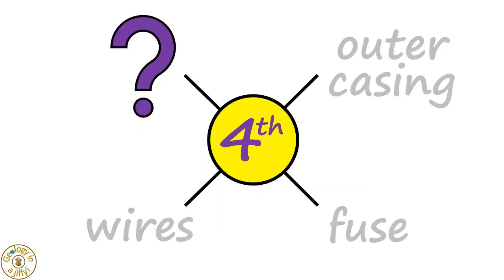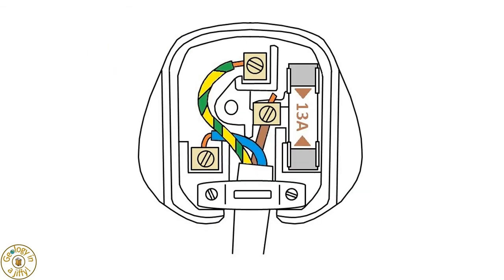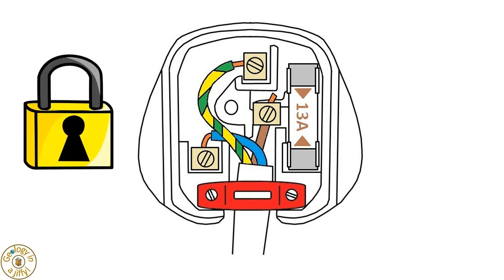The fourth part in a plug is the cable grip, here coloured in red. Its job is to lock the cable firmly into the plug, so making the plug safer to use.